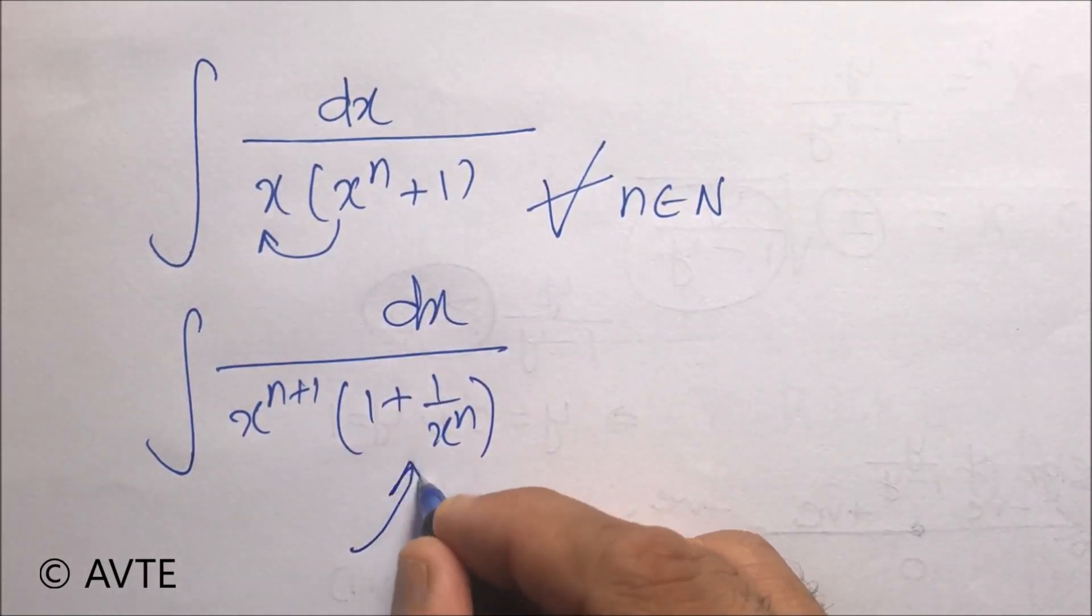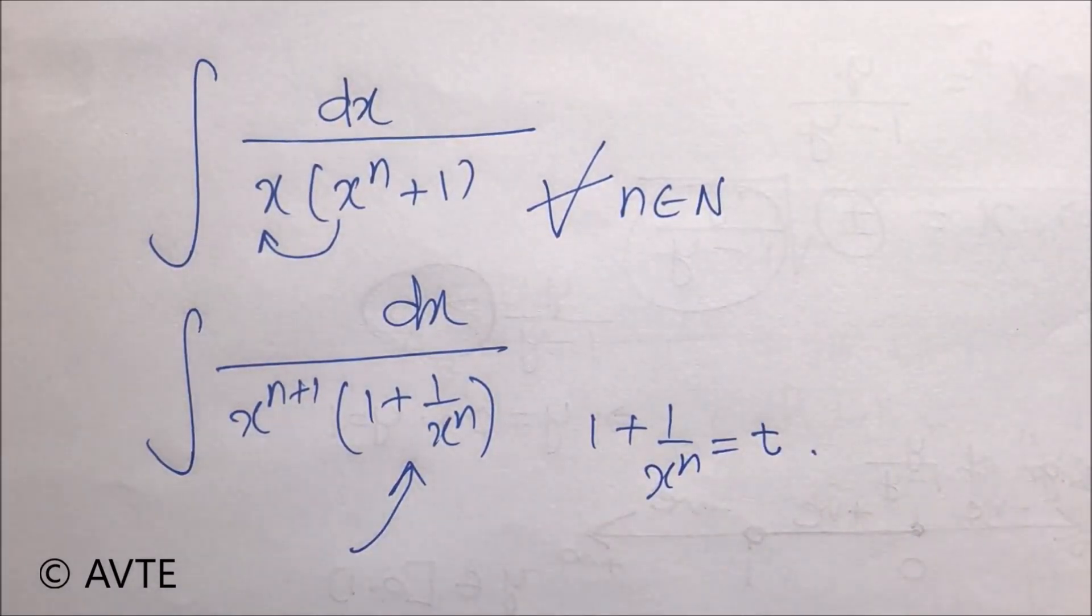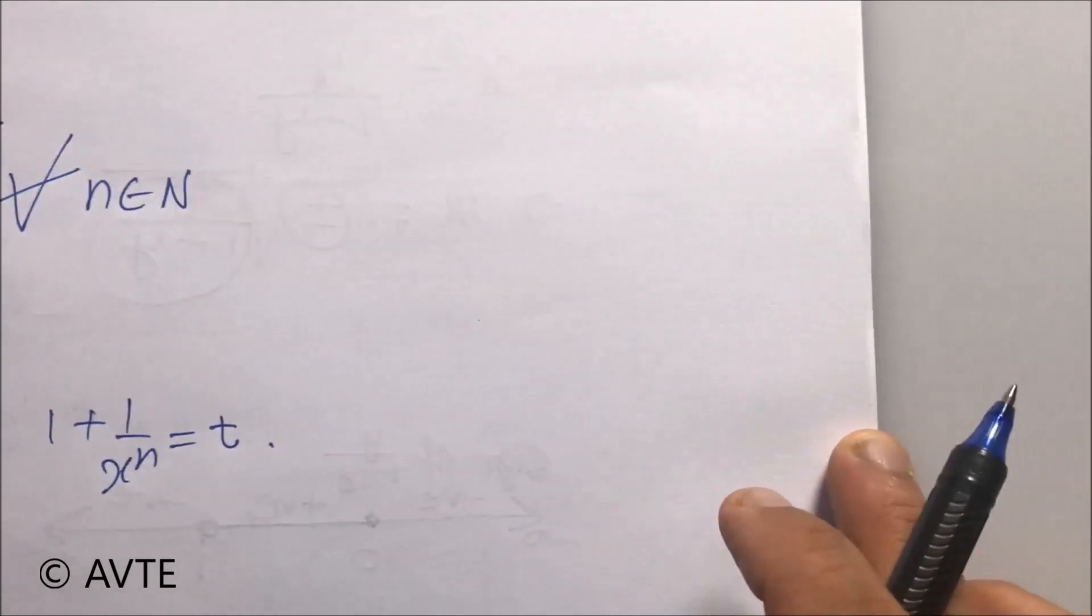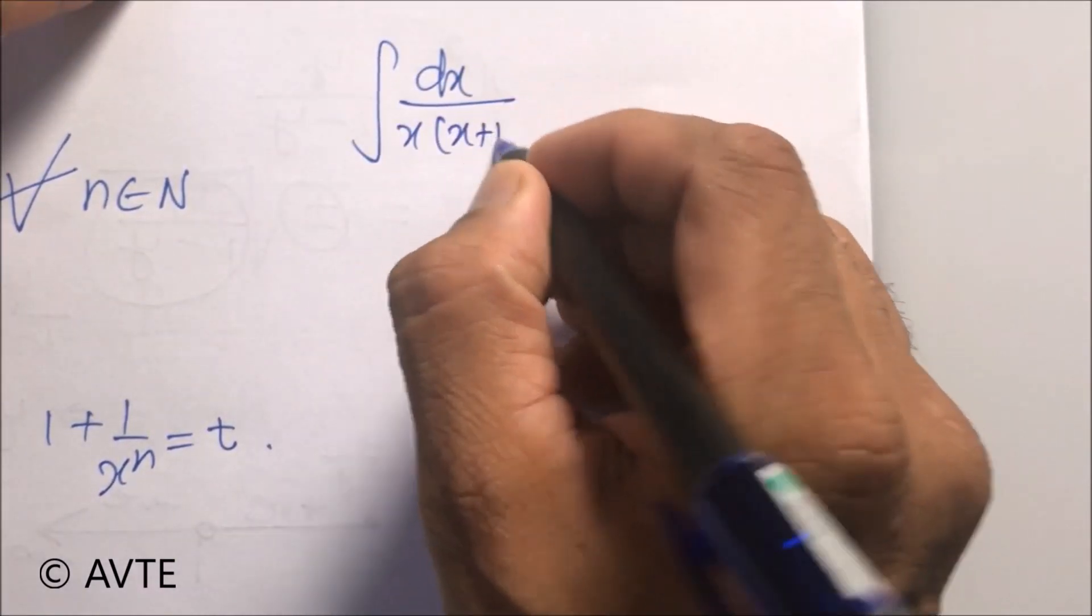...where n is a natural number, it's better you take common and you can put 1 plus 1 over x to the power n is equal to t to get the answer.